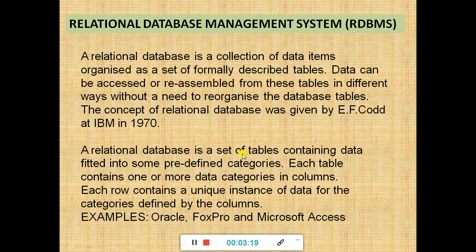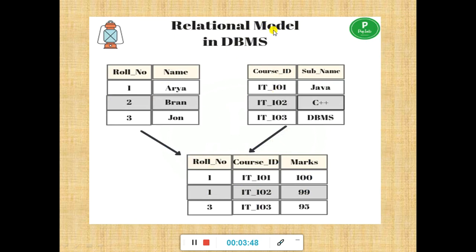A relational database is a set of tables containing data fitted into some predefined categories. Here you can see an example of a relational model in DBMS — a database management system. It is a collection of a set of tables containing data fitted into predefined categories.